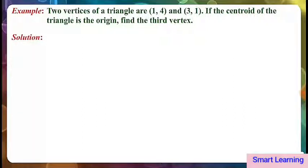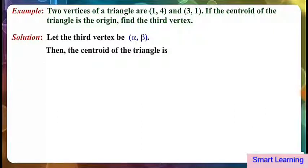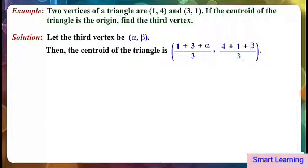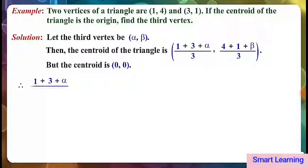Let's solve this. Let the third vertex be alpha comma beta. Then the centroid of the triangle is 1 plus 3 plus alpha divided by 3, comma, 4 plus 1 plus beta divided by 3. But the centroid is 0 comma 0. Therefore, 1 plus 3 plus alpha divided by 3 is equal to 0, and 4 plus 1 plus beta divided by 3 is equal to 0.